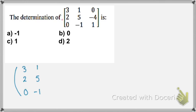The third column: 0, negative 4, and 1. Then we repeat the first column: 3, 2, and 0, and we repeat the second one: 1, 5, and negative 1. Then by multiplying the three numbers in the first diagonal with yellow.